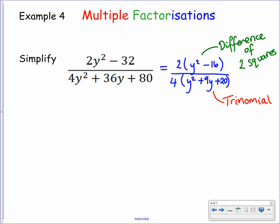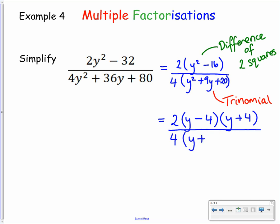To factorize the numerator, we apply the difference of two squares — taking the square root of both terms, one positive and one negative. Now it's expressed as a product of factors. On the denominator we're looking for factors of 20 that give us a positive 9, so that's going to be 5 and 4. Leaving the 4 out front, we have y plus 4 and y plus 5.